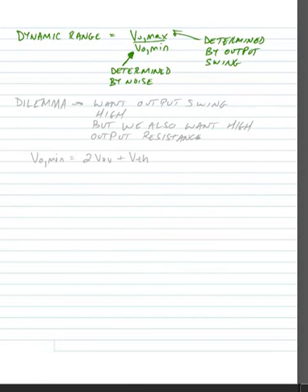And so obviously we would like this number to be very large. We'd like our dynamic range to be very big. We want big output swings and we also want to be able to detect very, very small output swings.